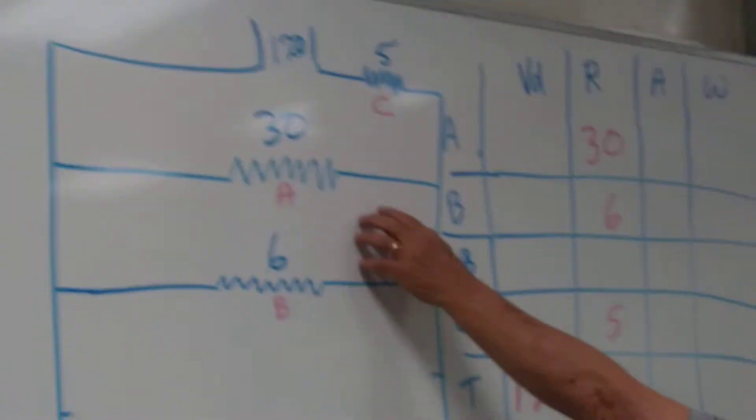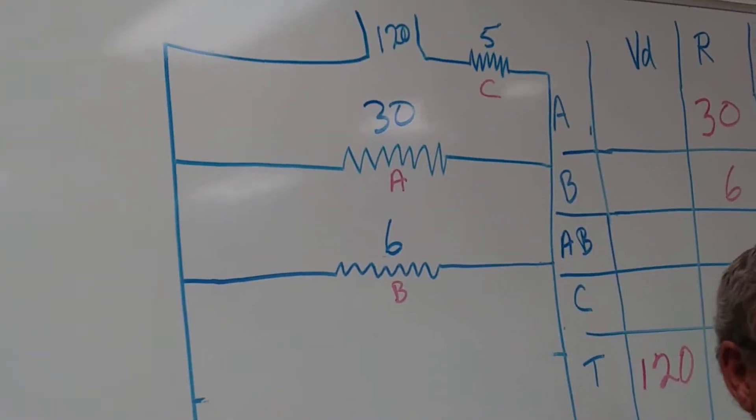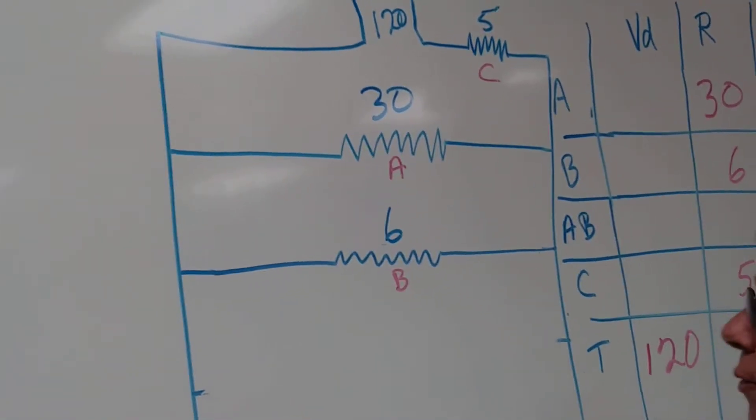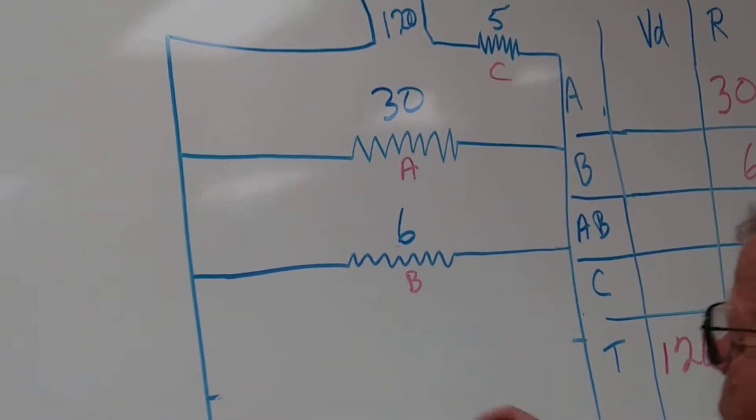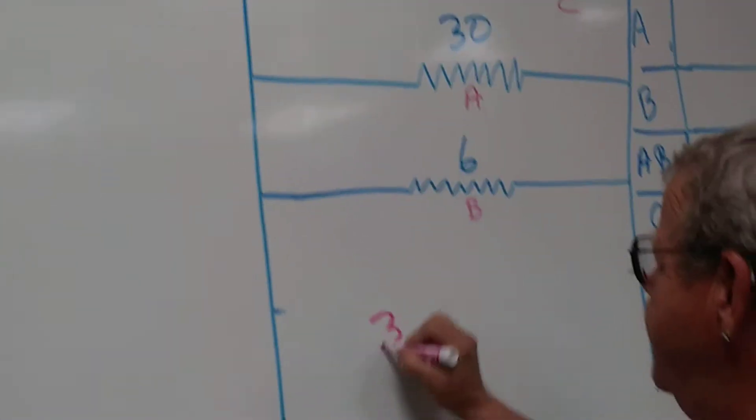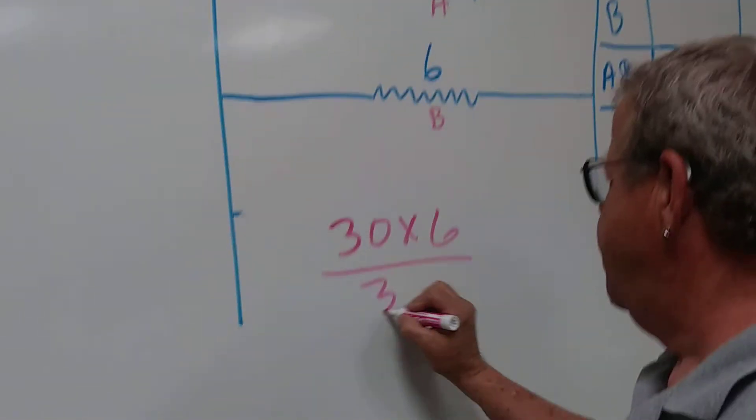The first thing that I have is two in parallel. I'm going to have to solve those using the old formula. I can't solve that an easy way, so I'm going to have to use 30 times 6 divided by 30 plus 6.